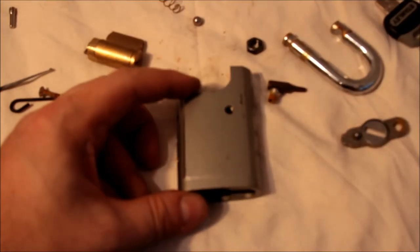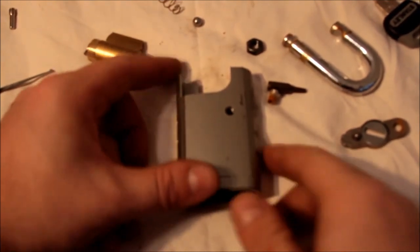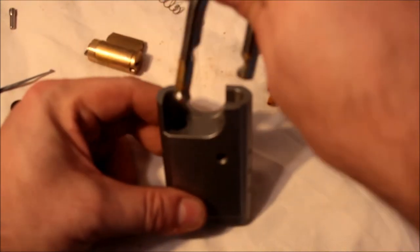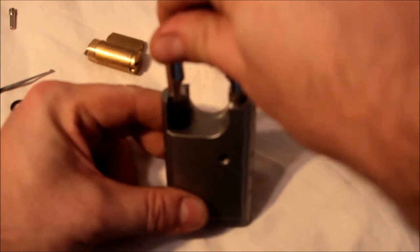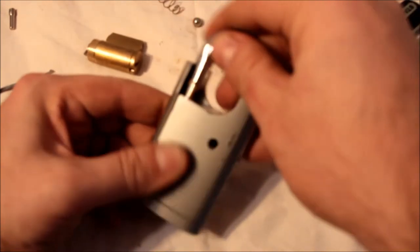But it looks basically similar to an American style actuator. And I'm not going to try to pull that out, because I don't want to try to put it back in. So this is a Stanley shrouded shackle padlock that has made its way across the country.